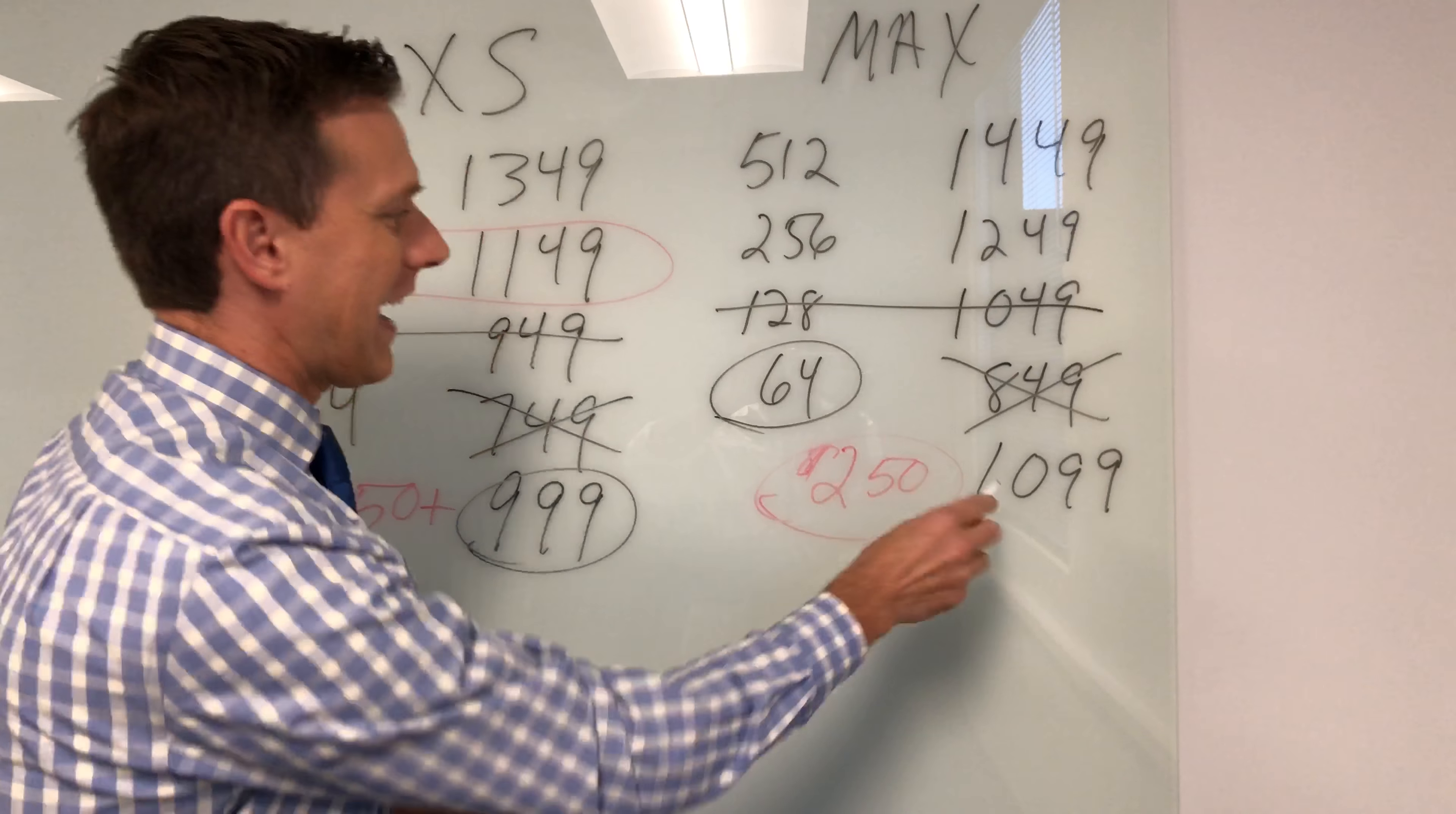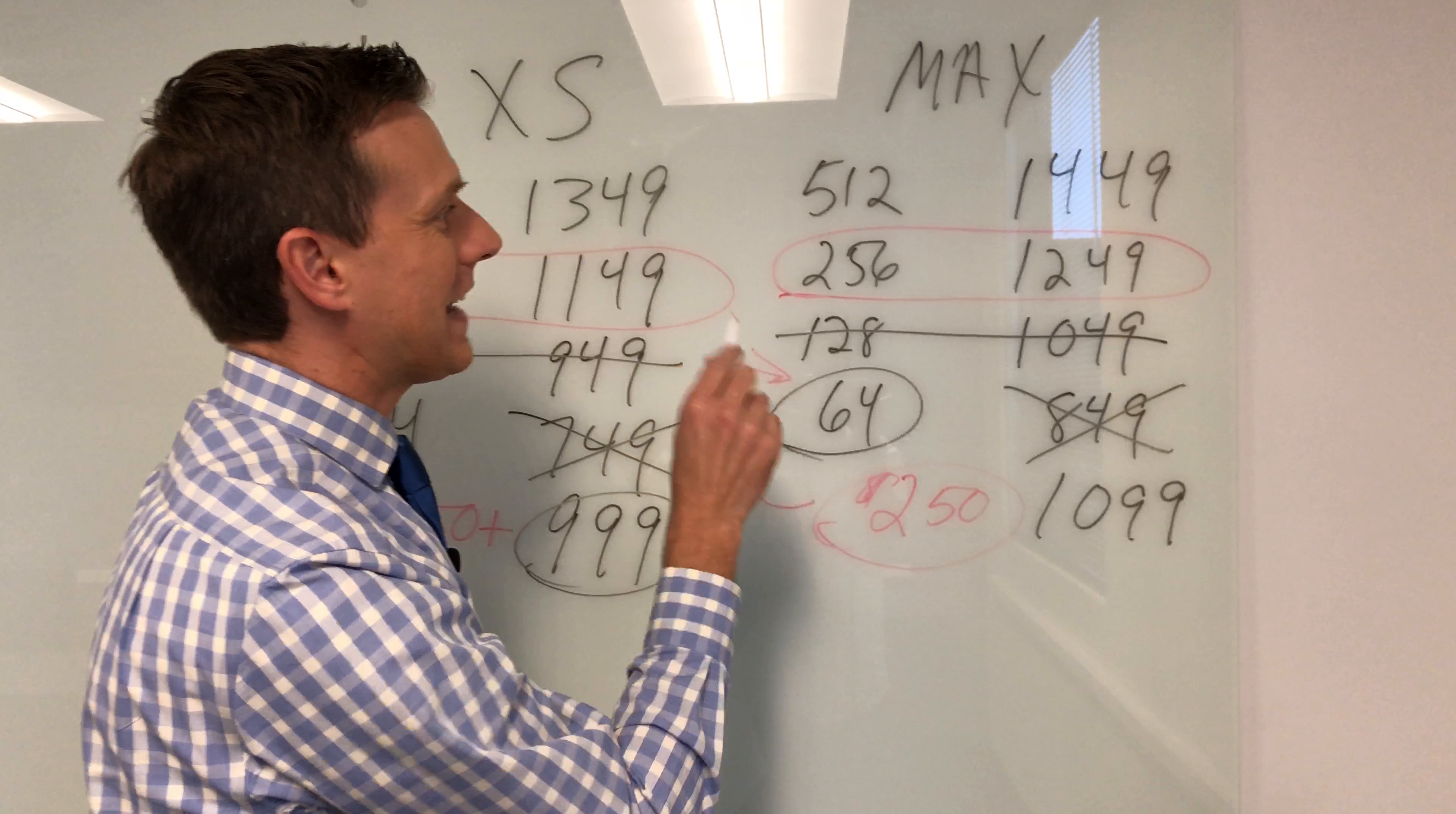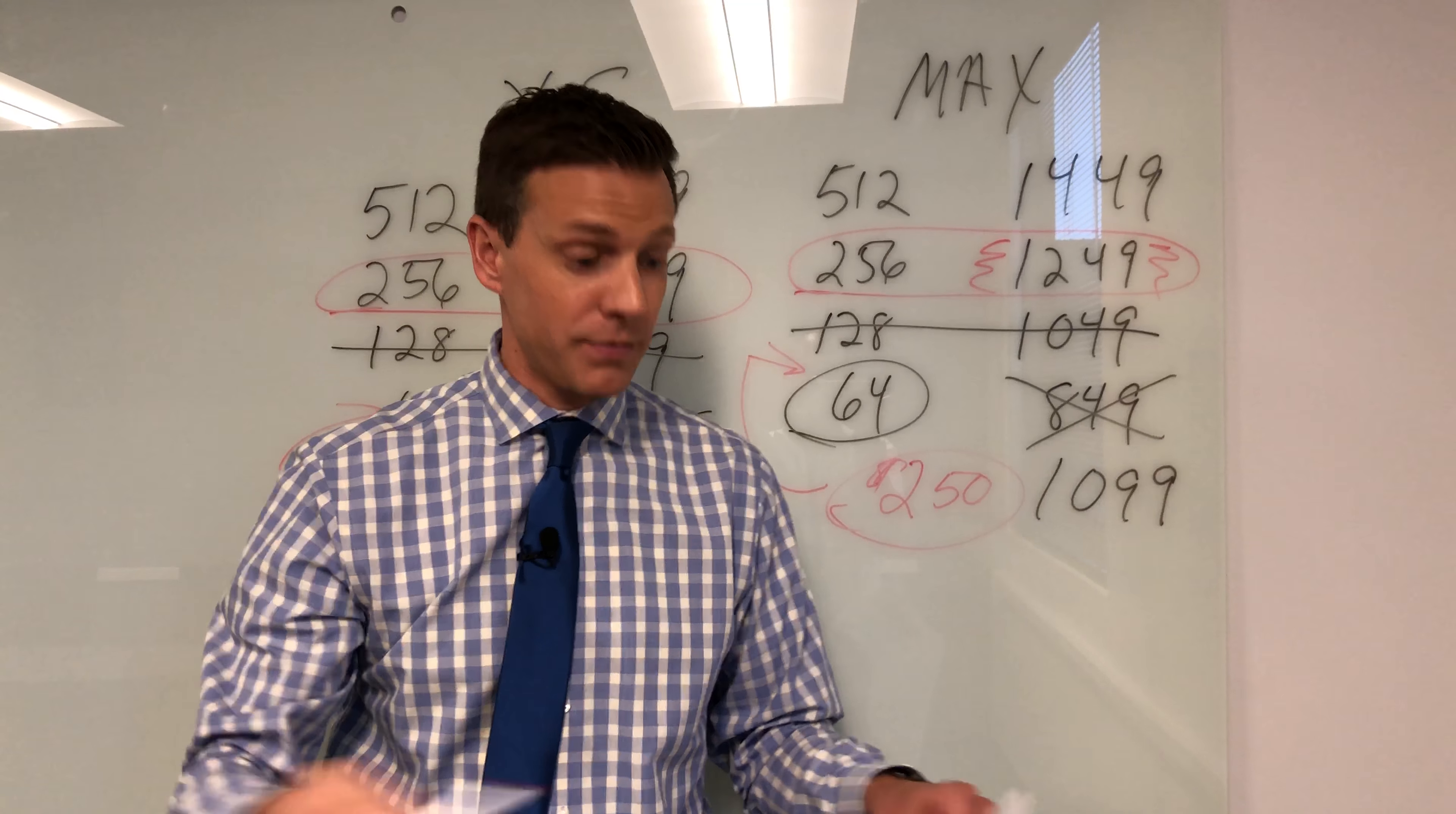So you're actually paying a $250 premium to get the cheapest phone. So again, your best bet when it comes to the iPhone XS Max is this price of $1,249, and that makes it kind of expensive.